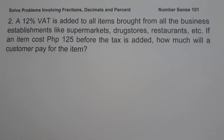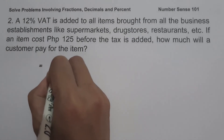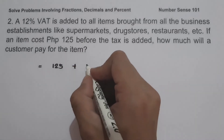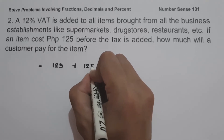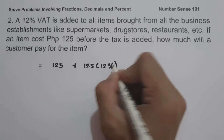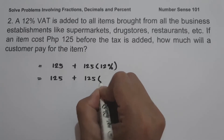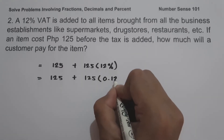On example number two, a 12 percent VAT is added to all items brought from business establishments like supermarkets, drugstores, restaurants, etc. If an item costs 125 pesos before the tax is added, how much will a customer pay for the item? To determine how much the customer pays, let us have 125 pesos plus 12 percent of the item cost, that is 125 times 12 percent. Let us convert 12 percent into decimal, which gives us 0.12.